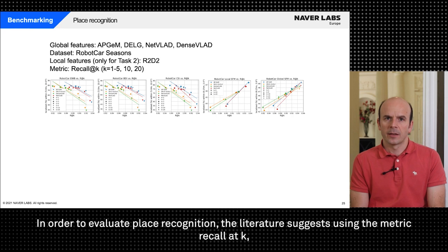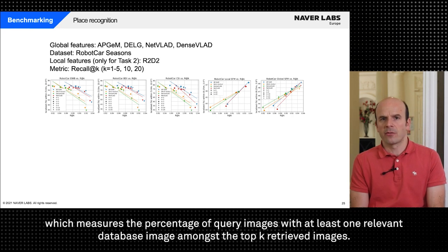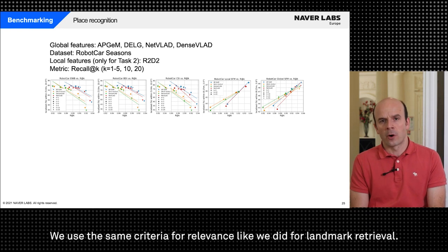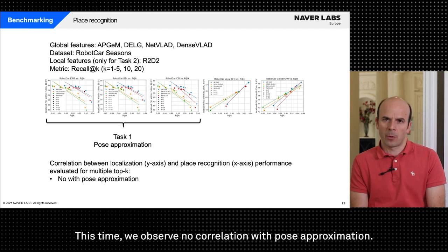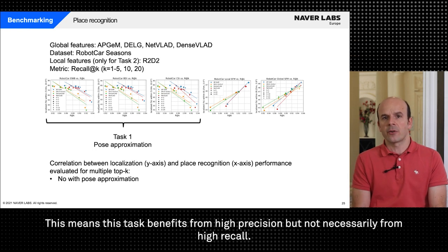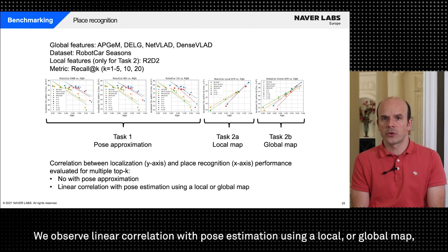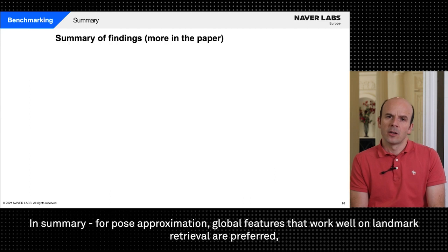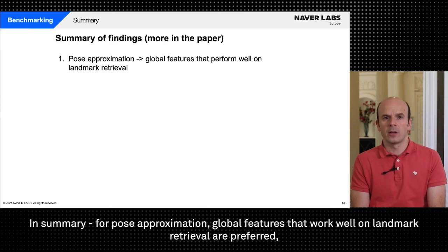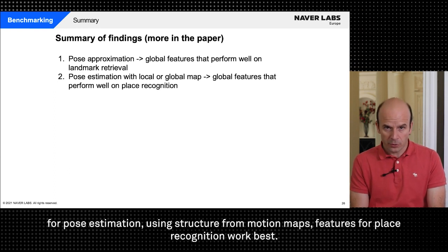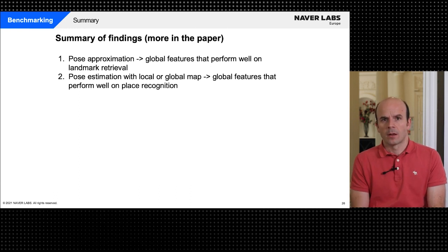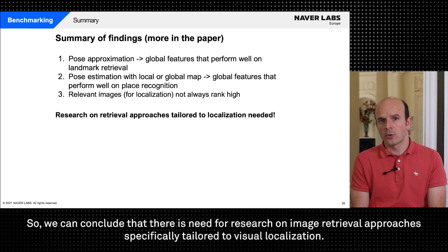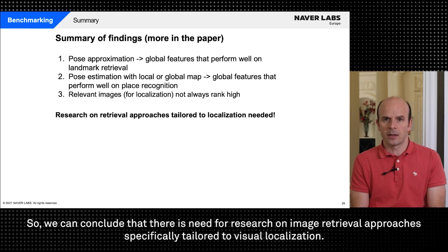In order to evaluate place recognition, the literature suggests using the metric recall at k which measures the percentage of query images with at least one relevant database image amongst the top k retrieved images. We use the same criteria for relevance like we did for landmark retrieval. This time we observe no correlation with pose approximation. This means this task benefits from high precision but not necessarily from high recall. We observe linear correlation with pose estimation using a local or global map because both recall and these localization tasks benefit from more retrieved images. In summary for pose approximation global features that work well on landmark retrieval are preferred, for pose estimation using structure from motion maps, features for place recognition work best. More importantly relevant images for localization need to rank high among the retrieved images and this is not always the case for current approaches. So we can conclude that there is need for research on image retrieval approaches specifically tailored to visual localization. To foster such research our code and benchmark protocols are available online.